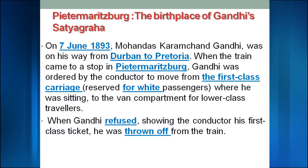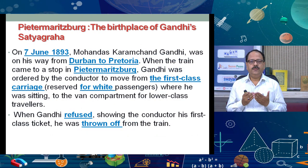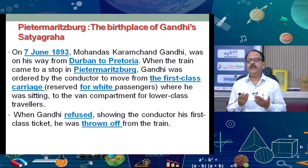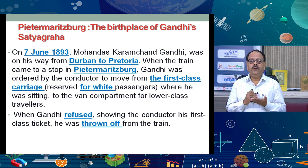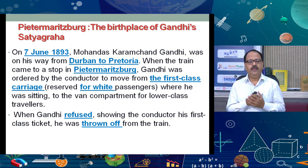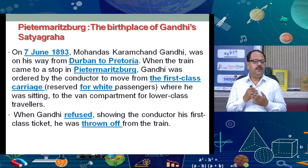Now, how did Mohandas Karamchand Gandhi convert into Mahatma Gandhi? On 7th June 1893, when he was going from Durban to Pretoria, at a station called Pietermaritzburg, ticket checkers saw him sitting in a compartment reserved for white people. They asked him to leave; Gandhi Ji refused. His luggage was thrown out and he was removed from that compartment.